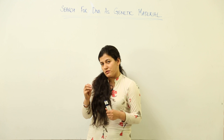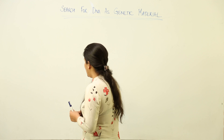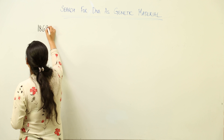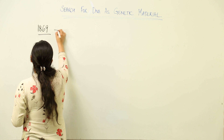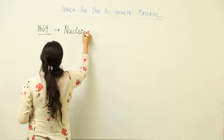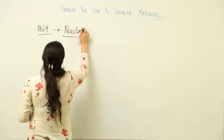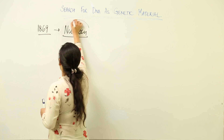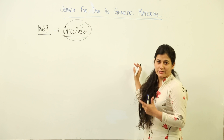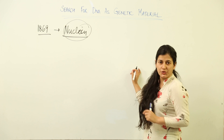The search started way back in 1869 when Friedrich Meischer termed the acidic content of the nucleus as 'nuclein.' He said there is some acidic substance present in the nucleus, and that was termed nuclein.